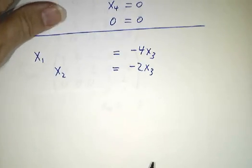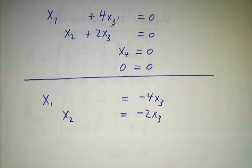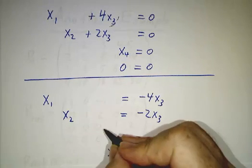We put the free variables on the other side of the equation, and we get x1 is minus 4x3, x2 is minus 2x3, x4 is 0, and I'm going to add in one more equation.